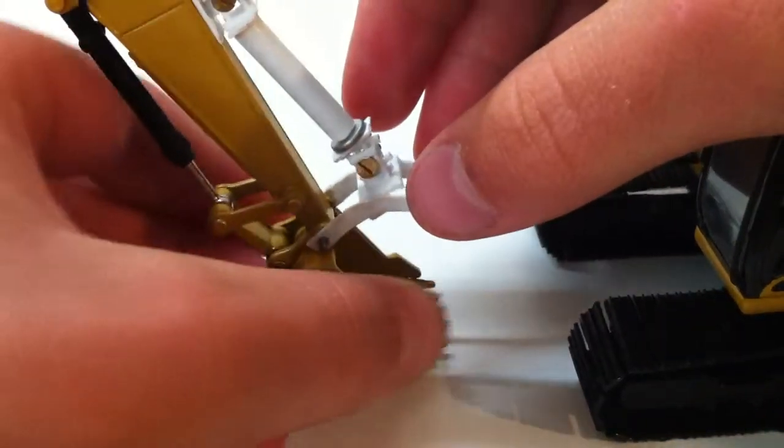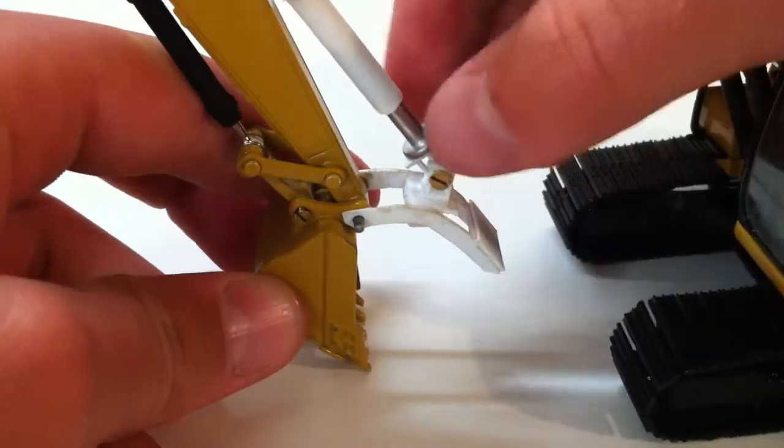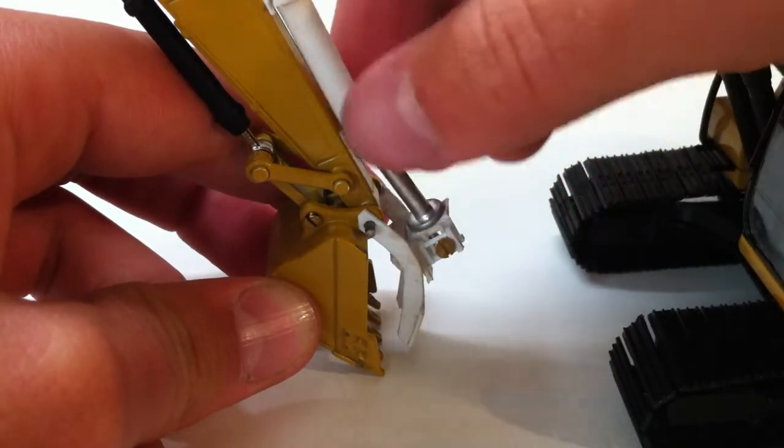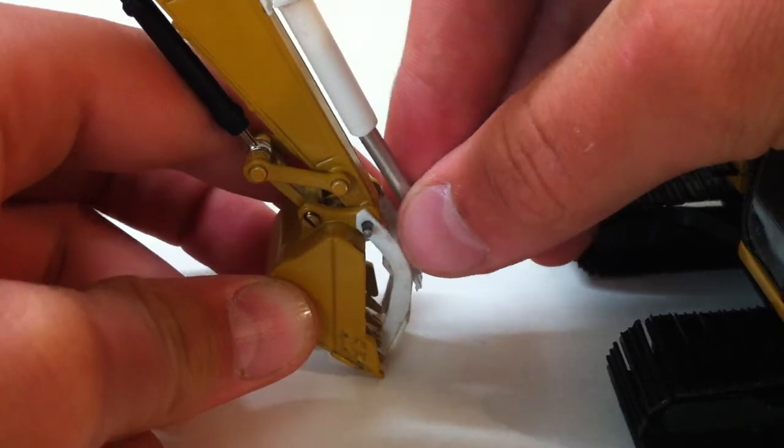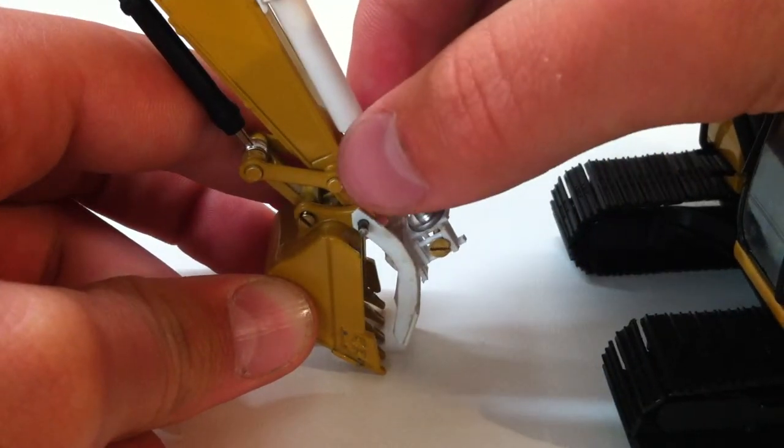And now I'll show you with the bucket all the way out, and the thumb down. So it will not, well, you can make it touch, but the cylinder is going to almost come out.